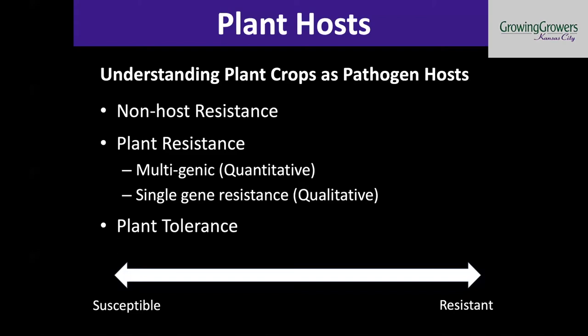A good example is with bacterial wilt, or Ralstonia solanacearum of tomato. There's a lot of genetics out there that shows fairly good resistance against that pathogen. What the physiologists figured out is that as that bacteria moves through the xylem tissues, the plant is actually able to build thicker cell walls and close some of those internal doors between cells in order to prevent the movement of that bacteria through the xylem. So it literally slows the colonization process — it doesn't stop it altogether — and in that case, that's what we would call quantitative resistance.